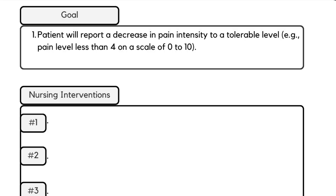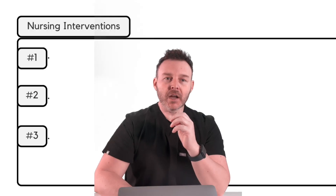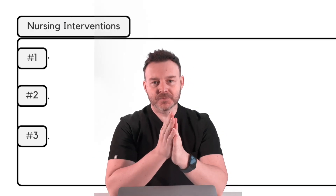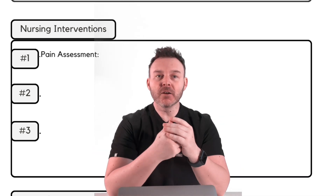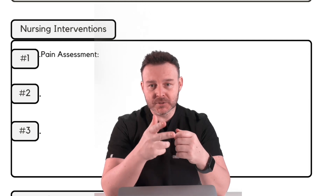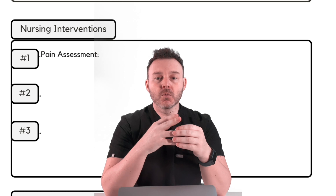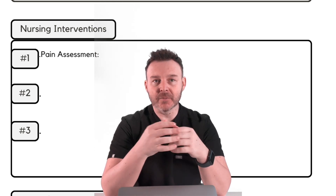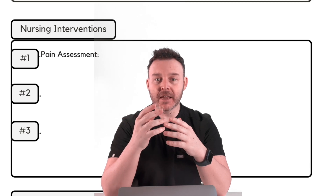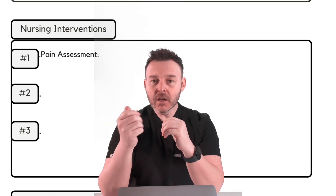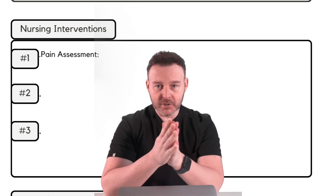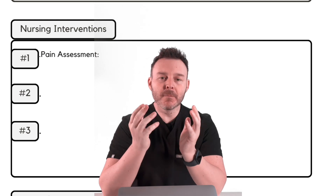For our goal: patient will report a pain level of less than 5 out of 10 by the end of my shift. Every time you write a goal, re-evaluate it using the SMART criteria. For interventions, pain assessment is first — assess the patient using the numerical scale from 0 to 10, or the Wong's Faces Scale. Ask the patient to describe their pain using the PQRSTU method. Check out the related video if you're unfamiliar with how to do a proper pain assessment.